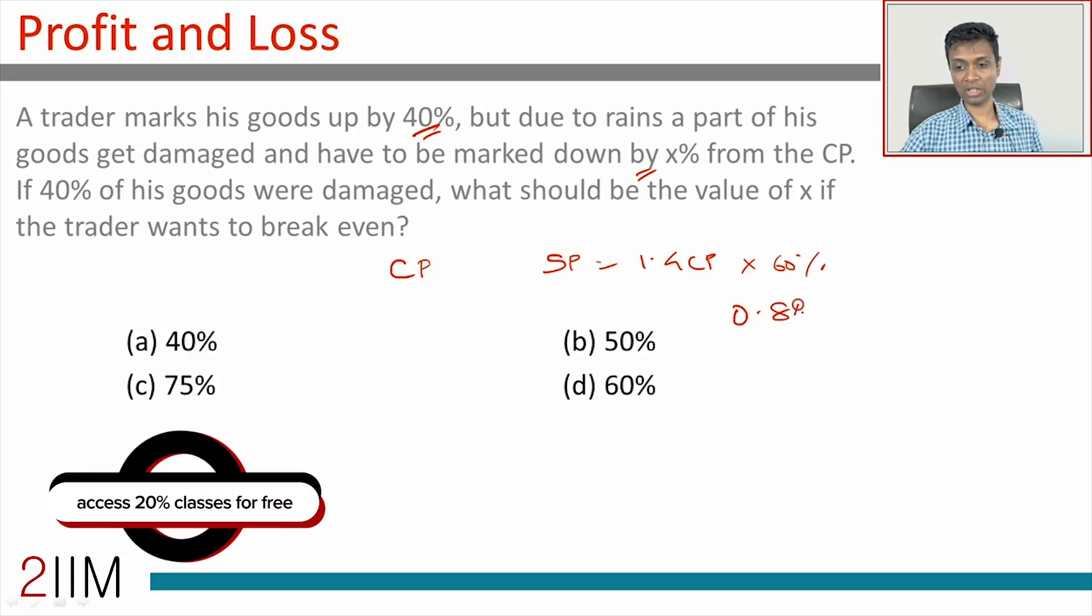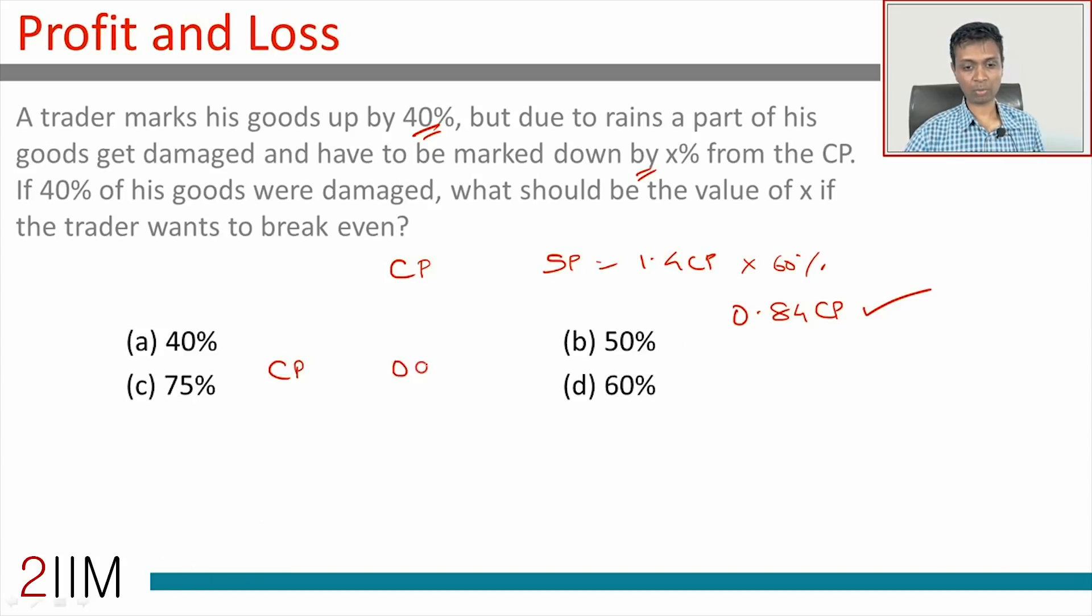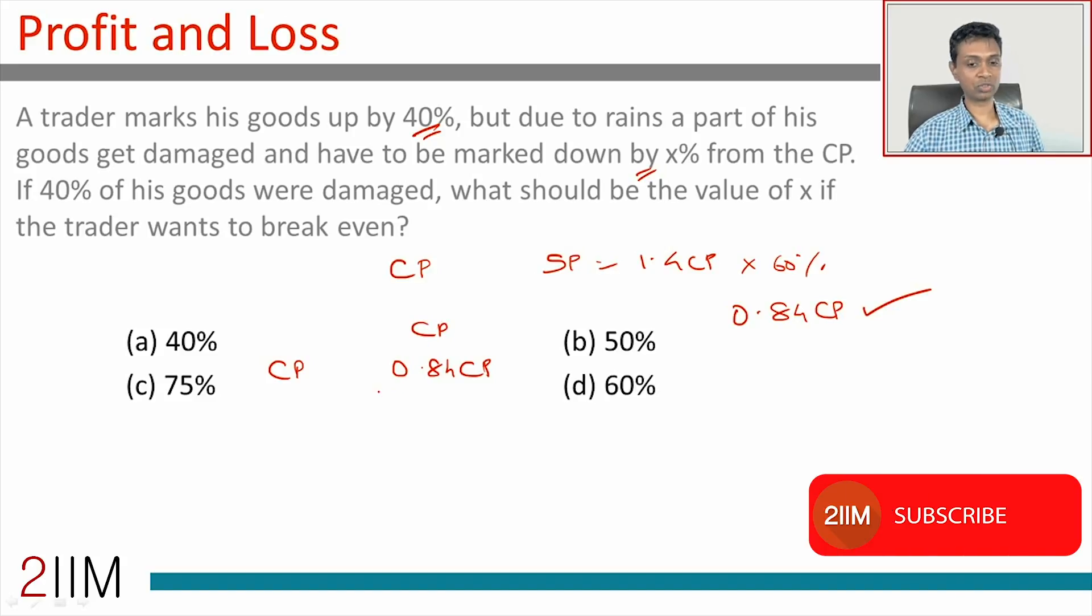He wants to break even overall, so he buys at cost price and makes 0.84 CP on the non-damaged goods. He wants to break even, or make cost price totally. So the remaining 0.16 times cost price is what he has to generate from damaged goods.